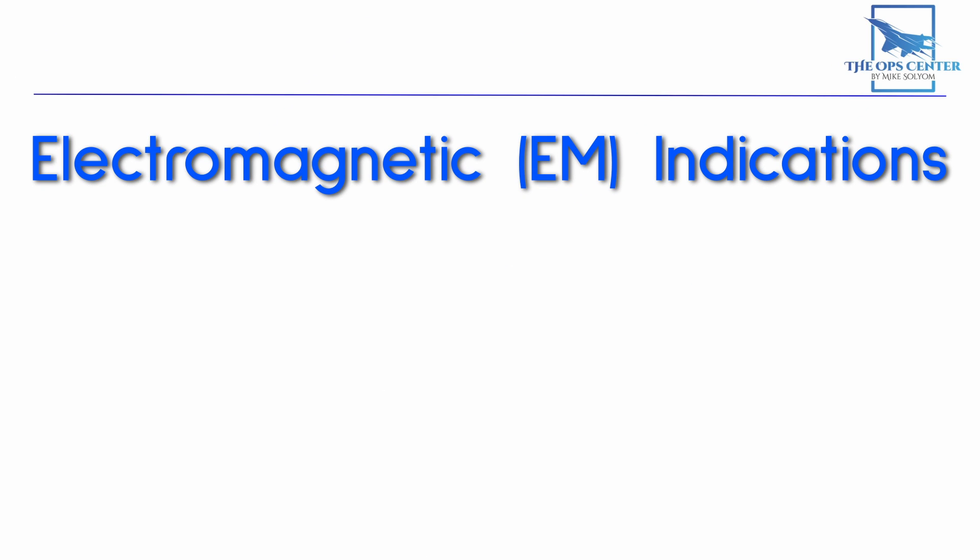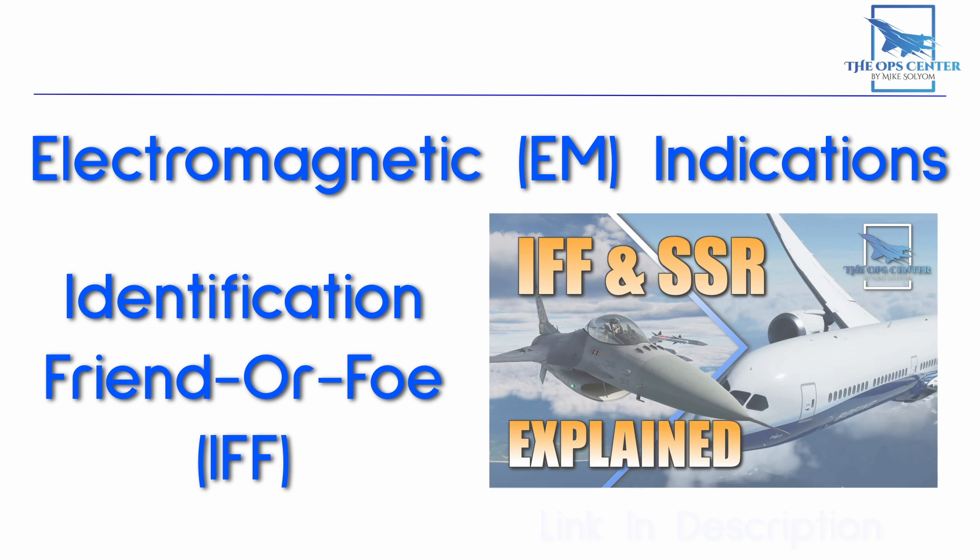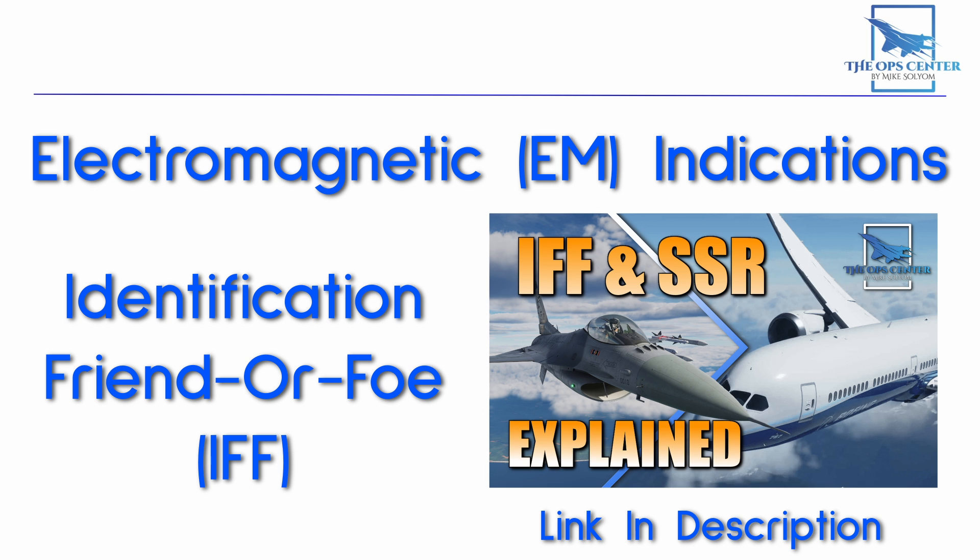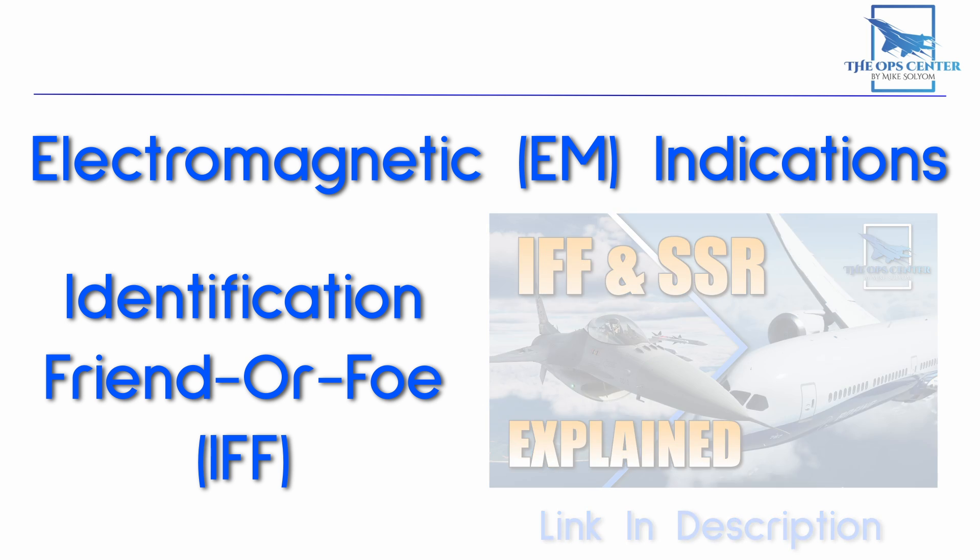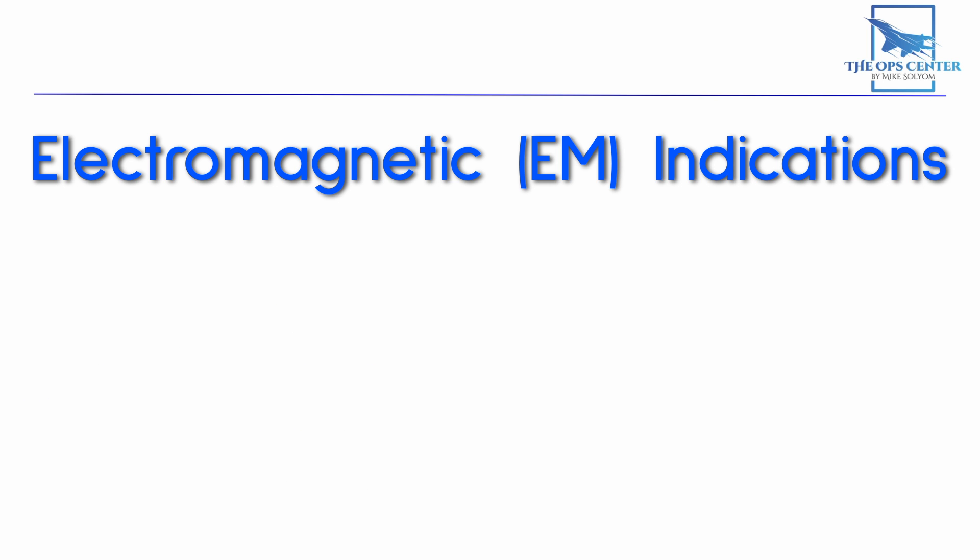Electromagnetic indications include systems like identification friend or foe transponders that can send a coded message to indicate a friend. Another option is a special type of radar that does non-cooperative target recognition to identify the make and model of a radar contact. If the target is emitting signals, like from a scanning radar, then these signals can also be used to identify it.